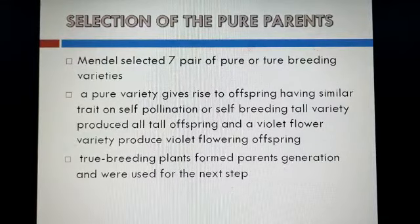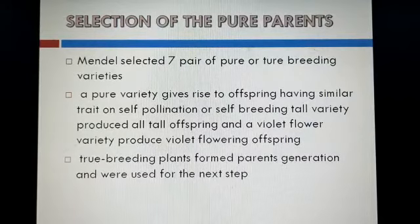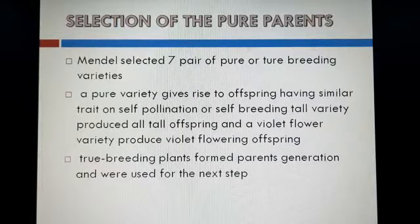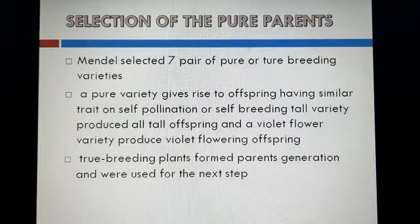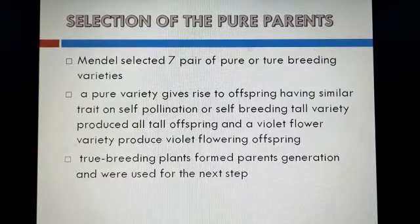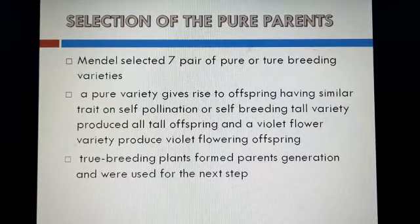The first step is selection of pure parents. What do we understand about pure parents and pure variety? We also call them true variety. Pure varieties are in a homozygous condition. If we have a variety and perform self-pollination for the next two or three generations, and then cross the tall varieties, all the offspring will be tall.